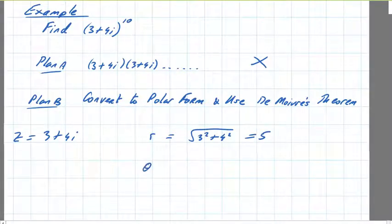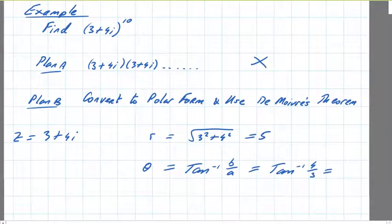And theta, the angle, is the inverse tan of b over a, which is the inverse tan of 4 over 3, which is 53 degrees approximately on the calculator.